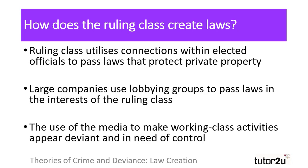How can the ruling class create laws? According to Marxists, the ruling class utilise their social connections with elected officials to pass laws that protect their own interests, and this is primarily the protection of their private property. This is not restricted to individuals, with many large companies using lobbyists and lobbying groups to pressurise politicians into passing laws in the interests of the ruling class.